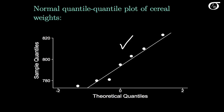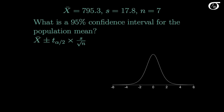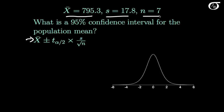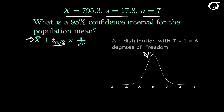We don't see any glaring deviations from normality, but it's always a little sketchy using these procedures for such a small sample size. Here once again is our confidence interval formula, along with the sample mean, sample standard deviation, and sample size. Now we need to find t sub alpha over 2, which comes from a t distribution with n minus 1 degrees of freedom — so a t distribution with 6 degrees of freedom.